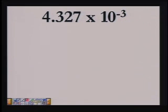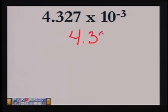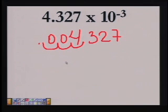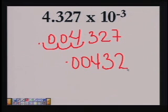If we want to change 4.327 times 10 to the negative 3rd to standard form — our exponent is negative, so we're moving to the left. So if we have 4.327, three spaces to the left: 1, 2, 3. Notice we have two empty spaces; we fill these with zeros. So 4.327 times 10 to the negative 3rd is .004327.